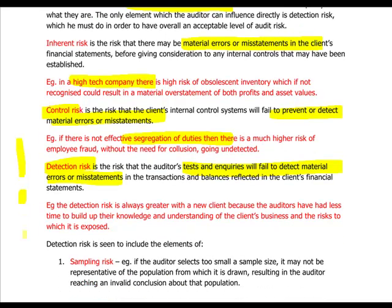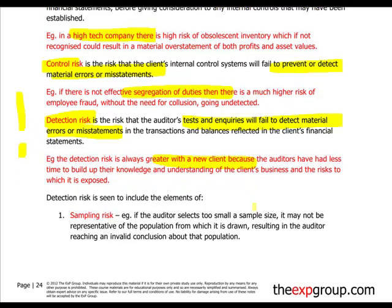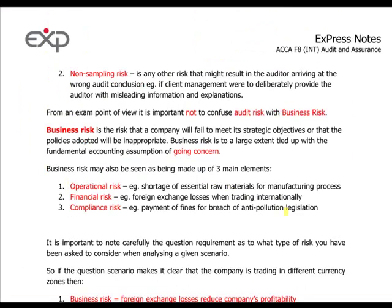For example, a new client is always riskier for an auditor because he lacks knowledge and understanding of that client's environment and entity. Detection risk can be further broken down into two components: sampling risk and non-sampling risk. Sampling risk arises because the auditor reviews financial statements on a sample basis — if he selects a sample that is too small or not representative of the population, he reaches an invalid conclusion, for example by avoiding items prone to fraud. Non-sampling risk arises when the auditor reaches a wrong conclusion for other reasons, such as management deliberately hiding or providing misleading information.